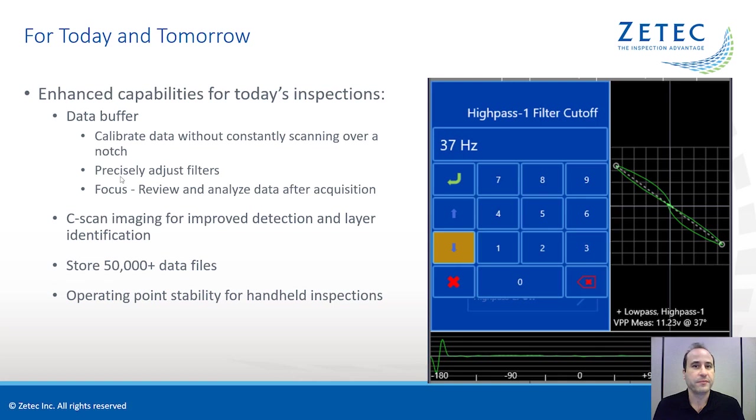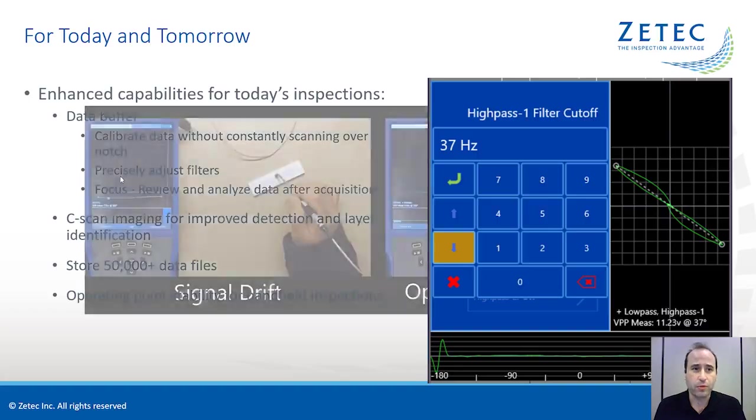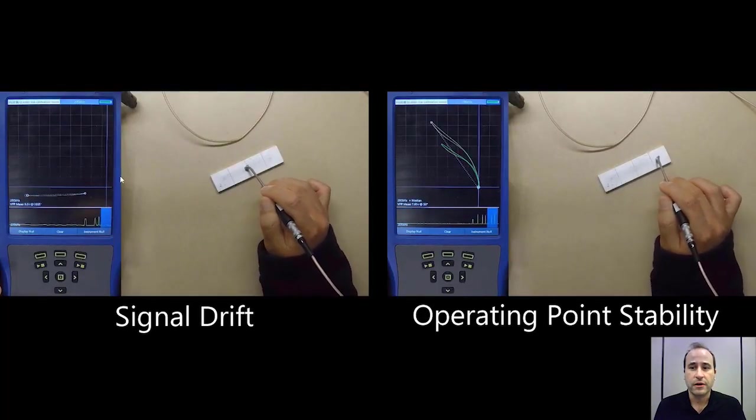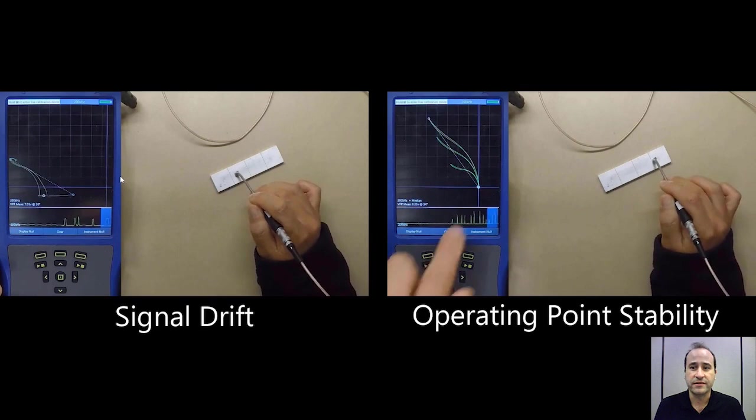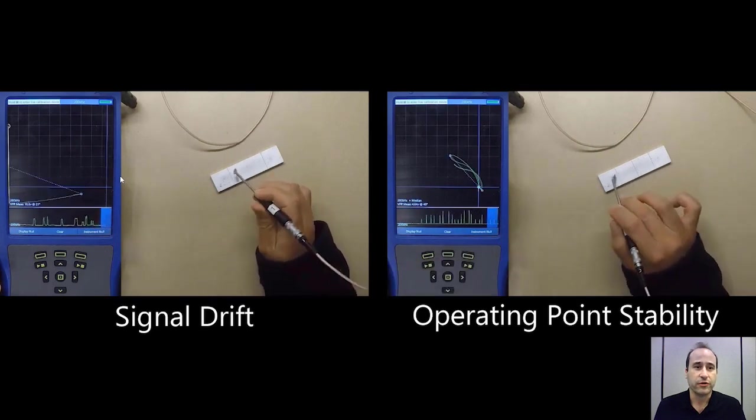We've incorporated the same c-scan technology that we use for array probes, and we apply it now to bolt-hole data as well. This results in improved detection and layer identification. You can store 50,000-plus data files and screenshots on the MIS-21C, so practically limitless. We've also incorporated a feature called operating point stability. This is for handheld probes. This allows the operating point to stay in a set area of the screen without drifting around.